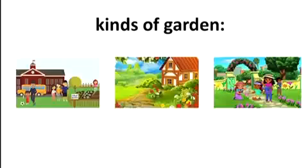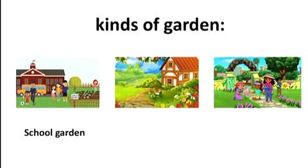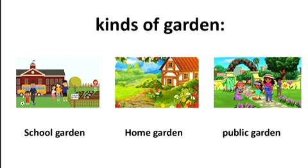Now, kinds of garden. We have three kinds of garden. In the first picture, we have school garden — hadikat al madrasa. In the second picture, we have home garden — hadikat al manzil. And in the third picture, we have public garden — hadikat al amma.